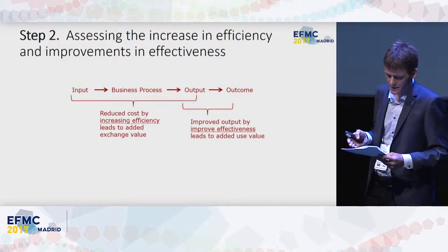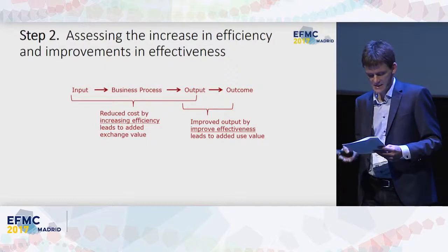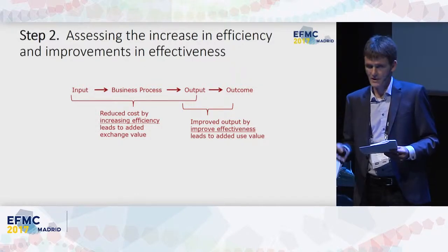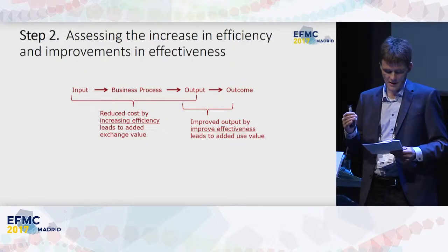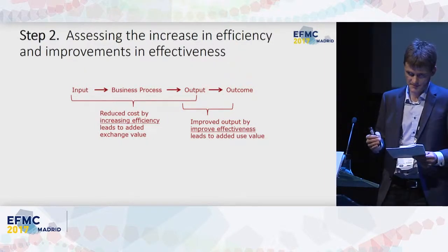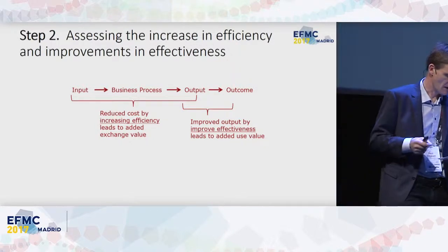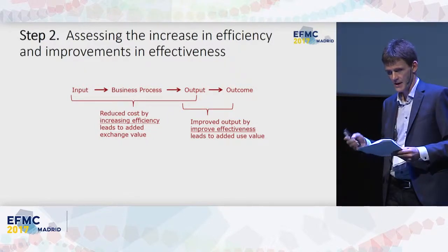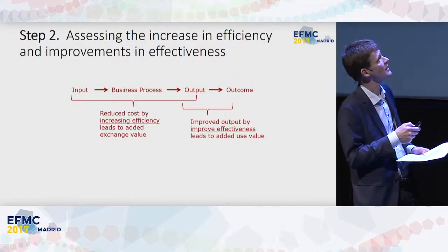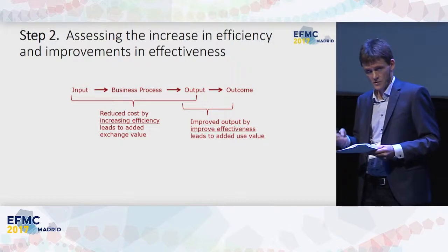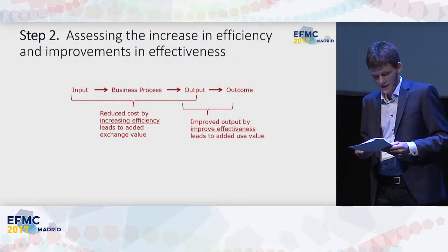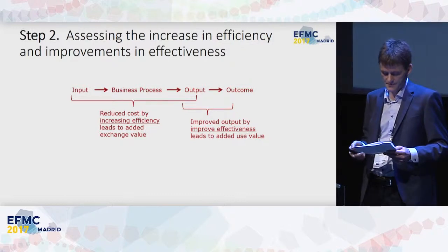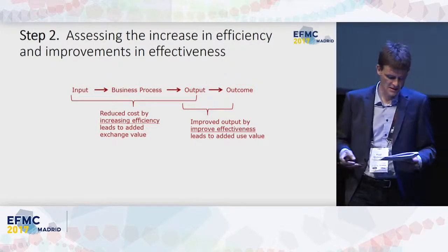In step two, the efficiency and effectiveness are assessed. Since the introduction of the IS, the quality of the cleaning has improved and the cost of the cleaning has not increased. Therefore, the effectiveness of the cleaning has improved. At the same time, the experience level of cleaning — the outcome — has increased according to the quarterly survey. The improvement in effectiveness has led to improvements in output and outcome, thereby leading to added use value.